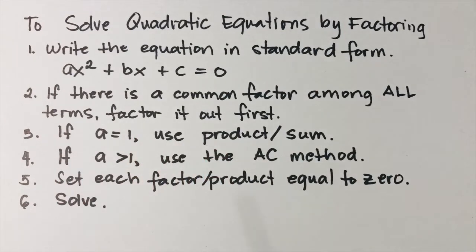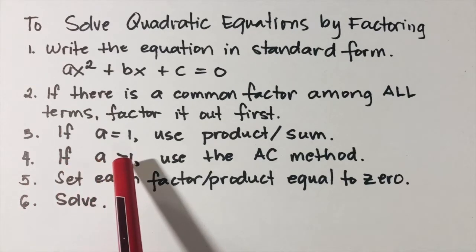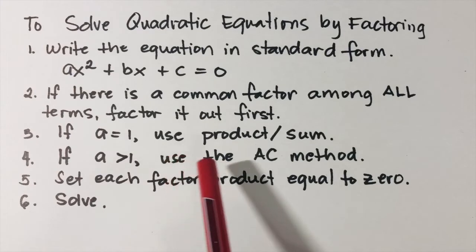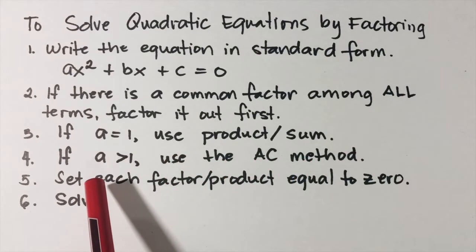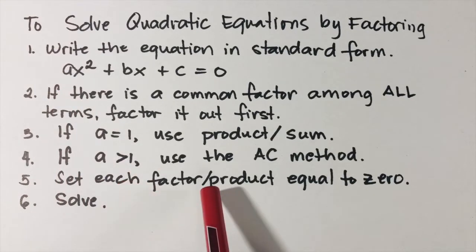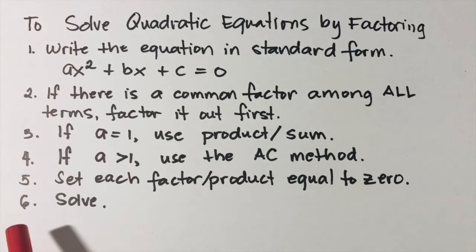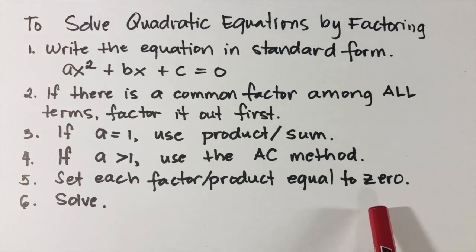Number three, if the value of a is equal to one, this is very simple — factor it using the product and sum. If the value of a, the coefficient of x squared, is greater than one, use the AC method. And number five, set each factor equal to zero, or simply use the zero product property, and then solve.